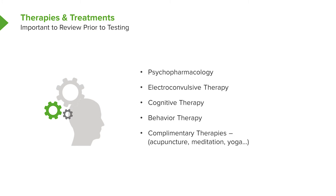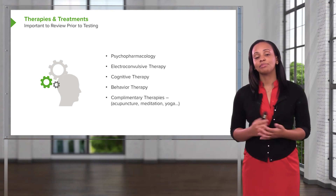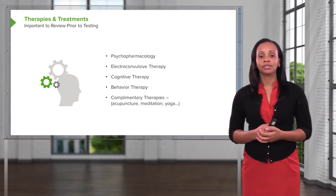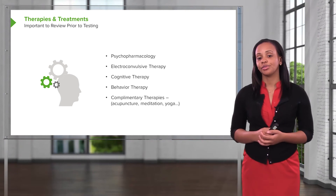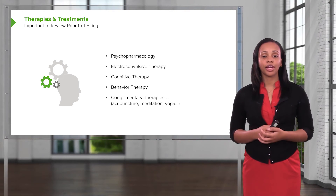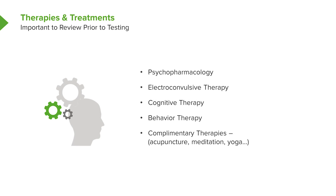Some common therapies and treatments used in mental health include psychopharmacology — that is medications made specifically to help those suffering from mental health issues — electroconvulsive therapy, also known as ECT, cognitive therapy, behavioral therapy, and don't forget complementary therapies. This includes acupuncture, meditation, and massage.